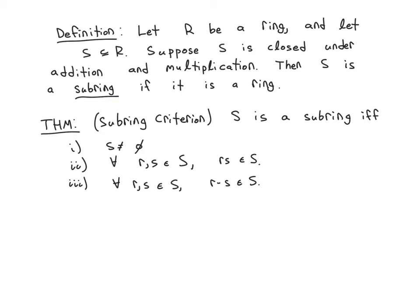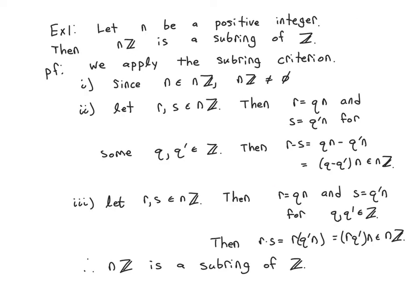You might remember one of the versions of the subgroup criterion combined looked like this one. It had the first one, you just had to have a non-empty subset, and you had to have for any two elements, RS inverse was in H. But of course, here the group operation is addition, so RS inverse becomes R minus S.